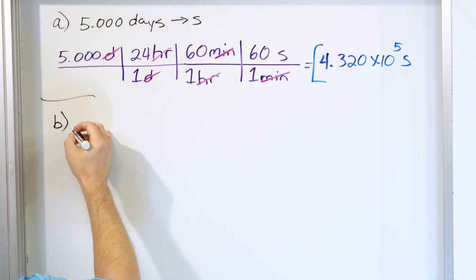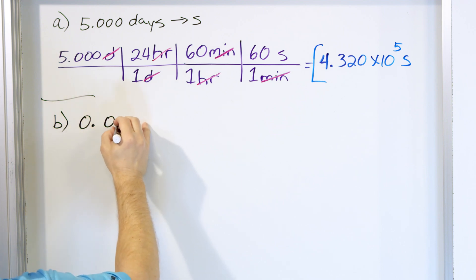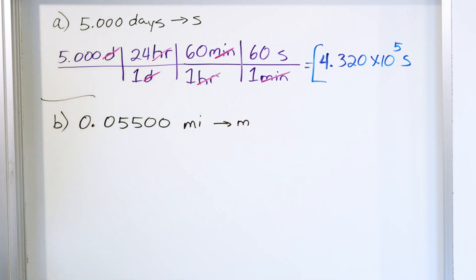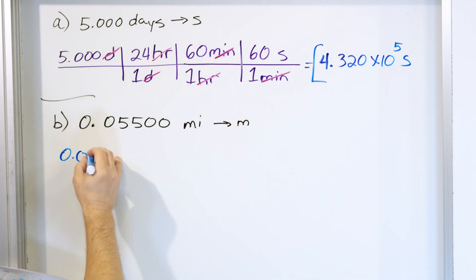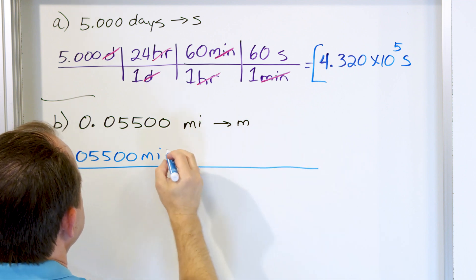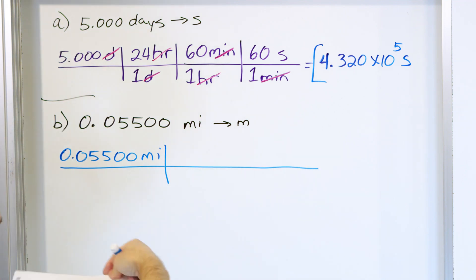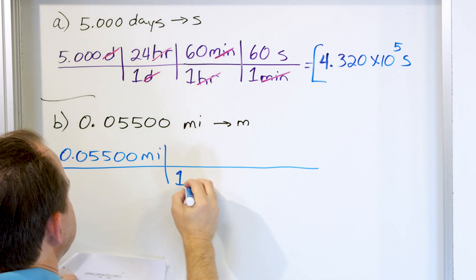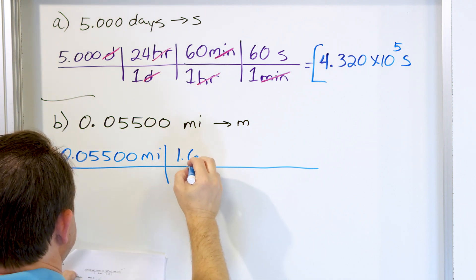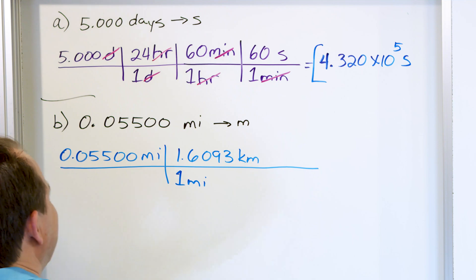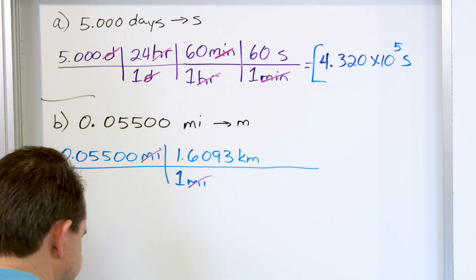Let's talk about part B. We're going to convert 0.05500 miles into meters. Again, I don't know exactly how to go miles to meters directly, so I start with 0.05500 miles. You look up in a reference that one mile is equal to 1.6093 kilometers — this is something I look up in a book. You write it this way so that miles cancels with miles on the top and bottom.